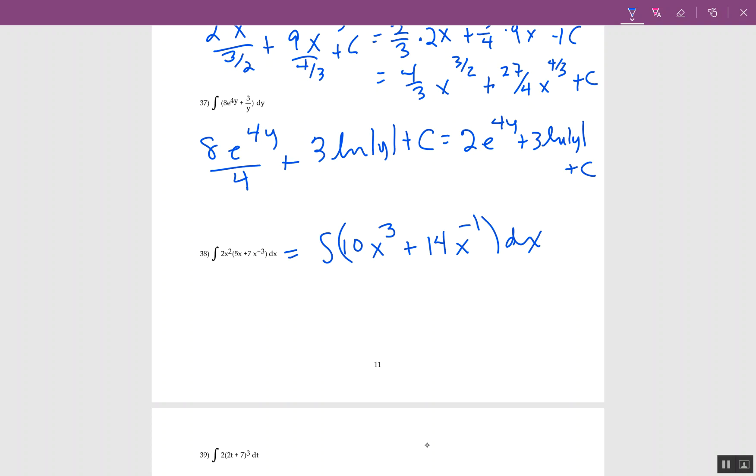Power rule for 10x cubed gives 10x to the 4th over 4. If you tried power rule for 14x to the negative 1, you'd get 0 over 0, which should set an alarm. Instead, this should be 14 ln of x plus c. So 10 over 4 is 5/2 x to the 4th plus 14 ln of x plus c.